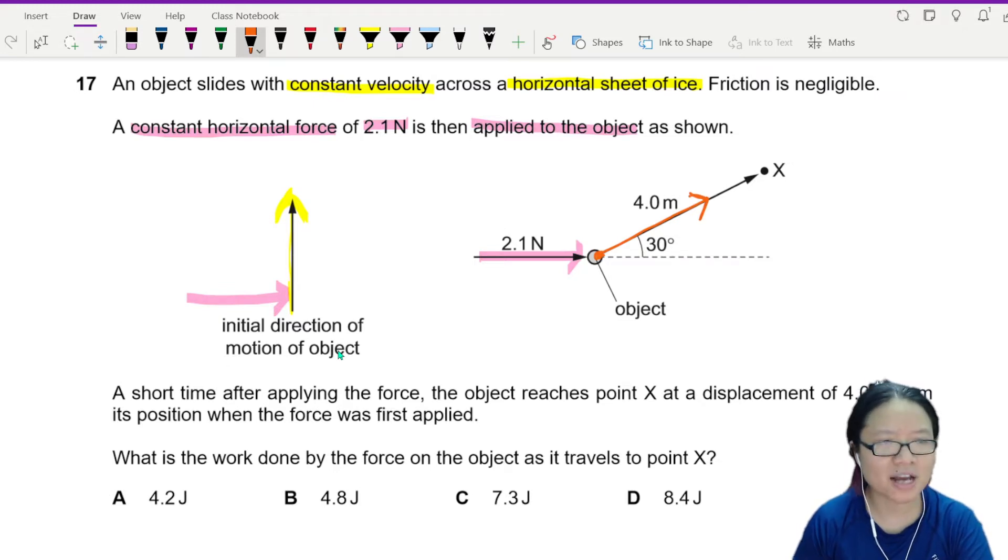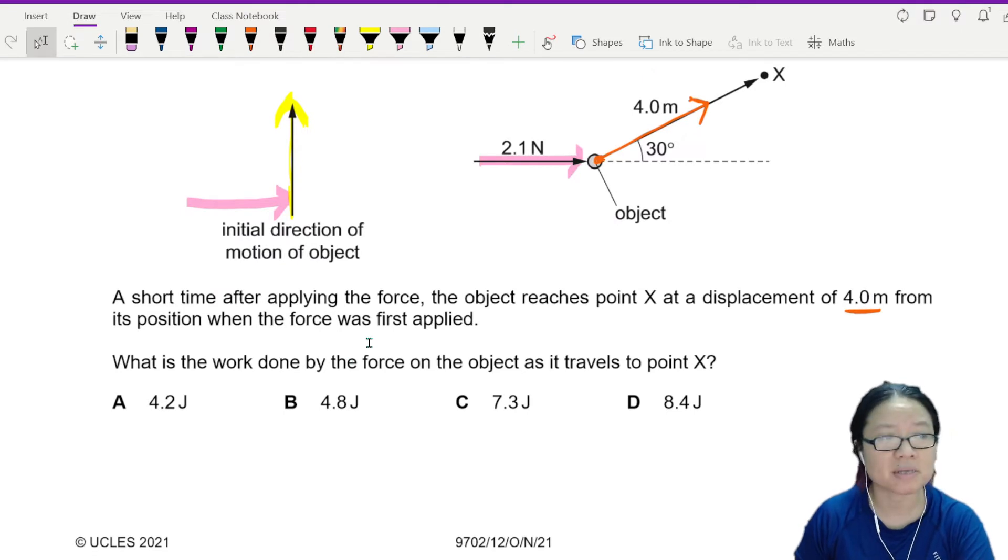A short time after applying the force, the object reaches point X at a displacement of 4 meters from its position when the force is first applied. What is the work done? Work done by the force on the object as it travels to point X.